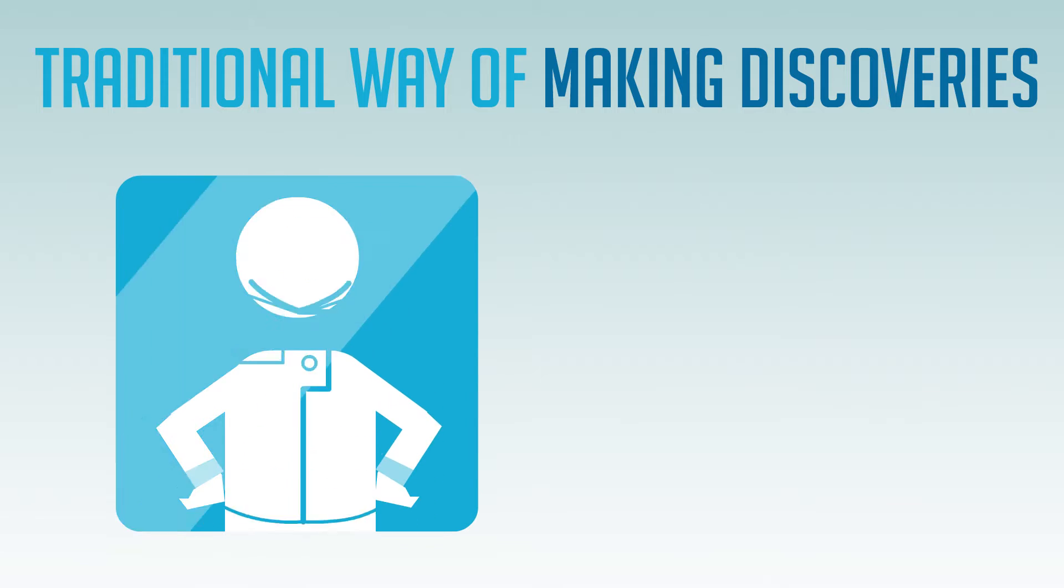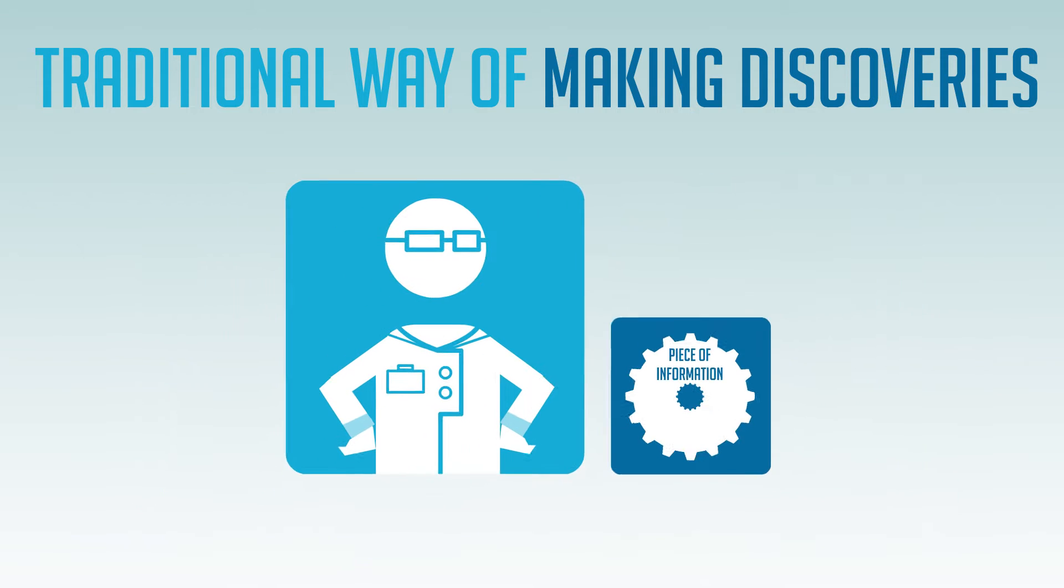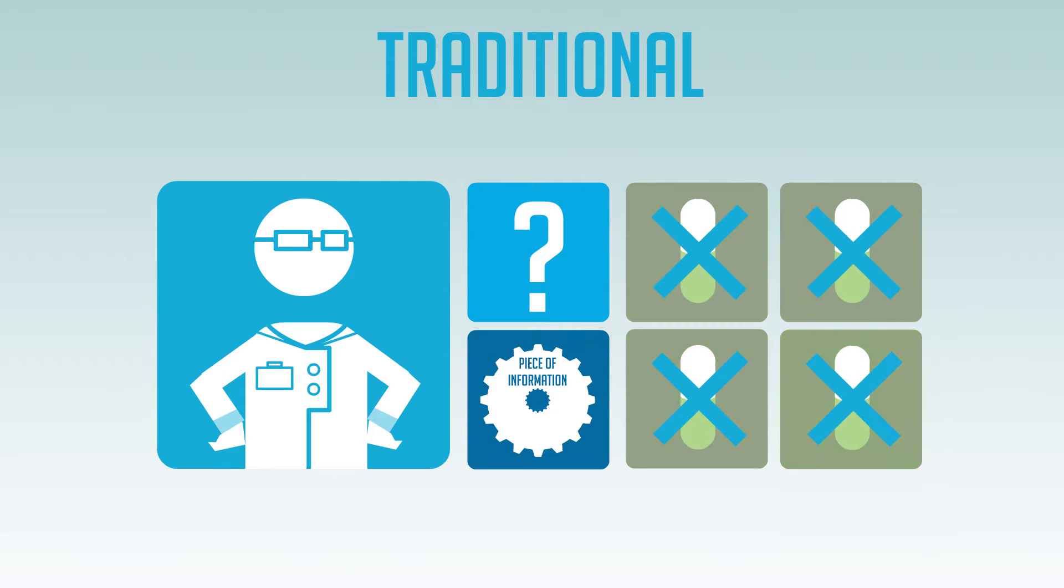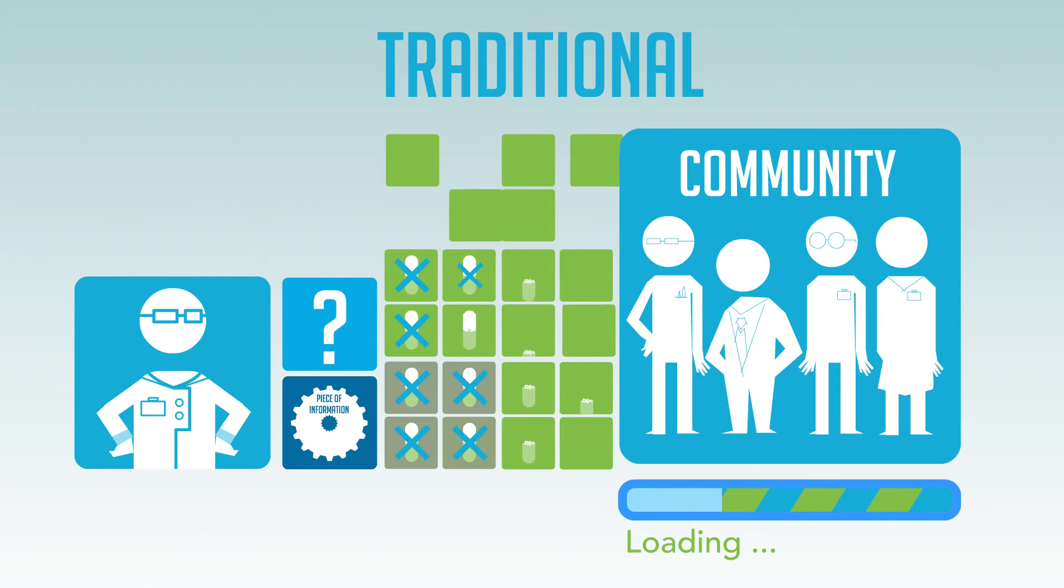The traditional way of making discoveries is linear. A single scientist works to uncover a piece of information. He asks a question, then through trial and error searches for an answer, while the rest of the research community waits, sometimes for years, to benefit from his findings.